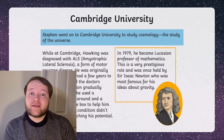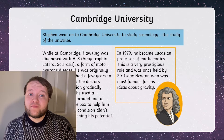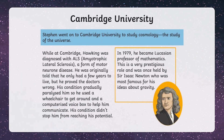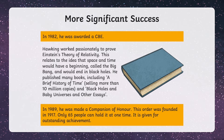What were the key events in his life? Stephen went on to Cambridge University to study cosmology — the study of the universe. He published many books, including A Brief History of Time, selling more than 10 million copies.